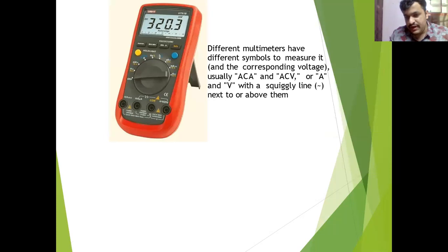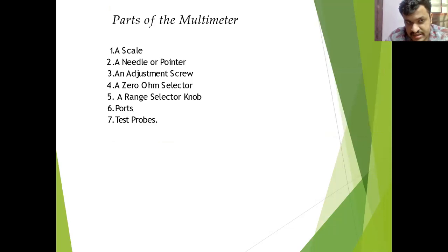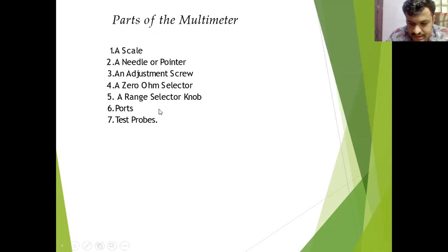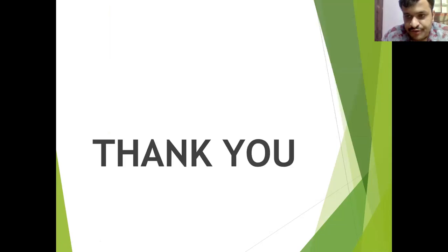In old analog multimeters, what happens is our needle will move and we get a reading. In that case, the parts shown here include a scale, a needle, adjustment screws, and an ohm selector. This selector knob is shown here — when we rotate this knob, we can select which parameter we want to check.